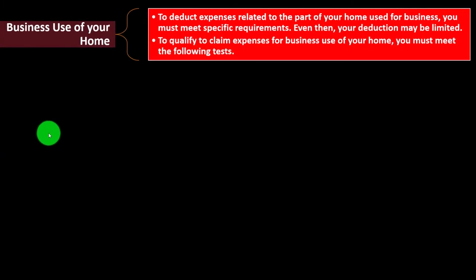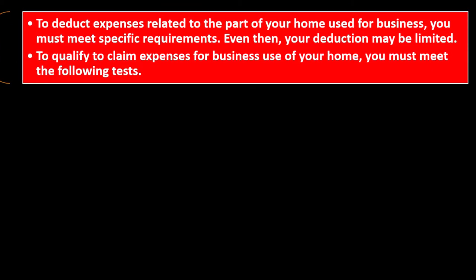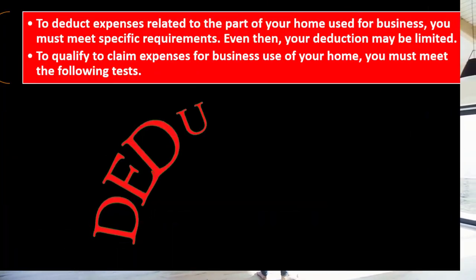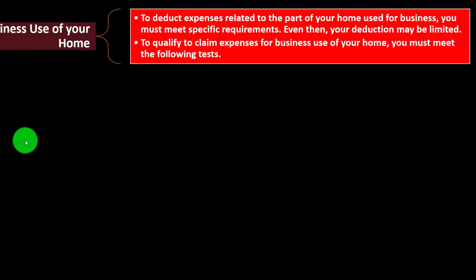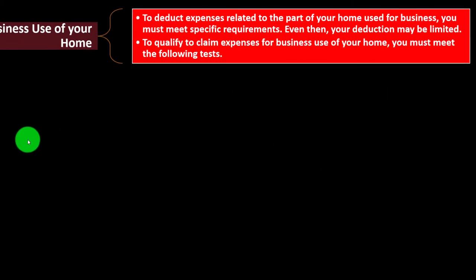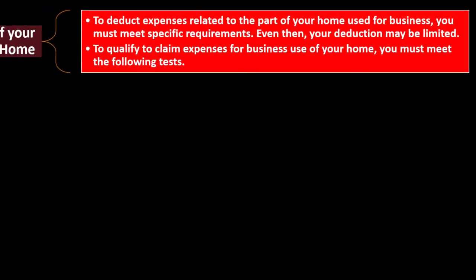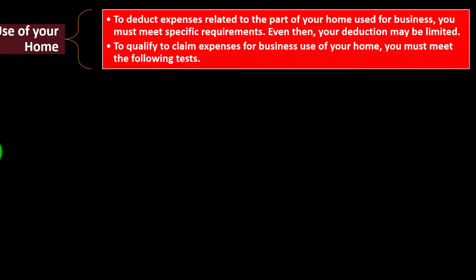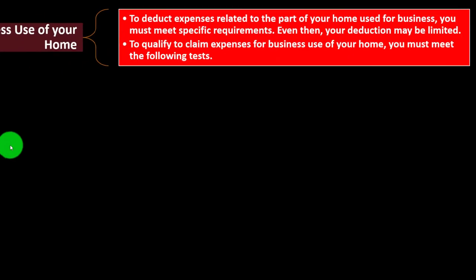Do I get to deduct part of it as the business? Typically you would think you'd get to deduct some of it, but you'd have to find a ratio to break out the business portion. If you're renting the home, you can allocate some of the rent as a deduction. If you're purchasing the home, there are issues with deductibility on Schedule C for items like mortgage interest and property taxes — but those may also be deductible as itemized deductions on Schedule A, creating an allocation issue.